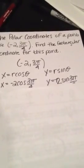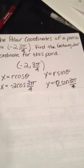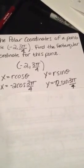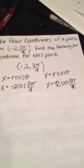You'll get x equals negative 2 cosine 3 pi over 4 and y equals negative 2 sine 3 pi over 4.